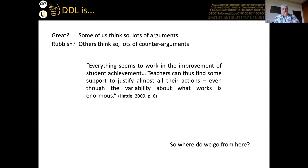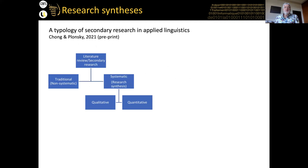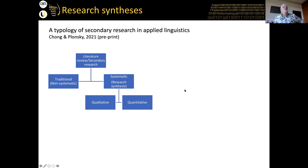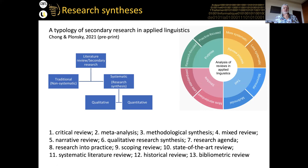So where do we go from here? This is where we come to the topic of syntheses — trying to make sense of a large body of research. Plonsky and Sin Wang Chong have a pre-publication paper online on a typology of secondary research in applied linguistics. At the top is literature review, dividing into traditional (non-systematic) — like the introduction to any academic paper reviewing a few papers that support your argument — and other types. They identified 13 different types of research synthesis.